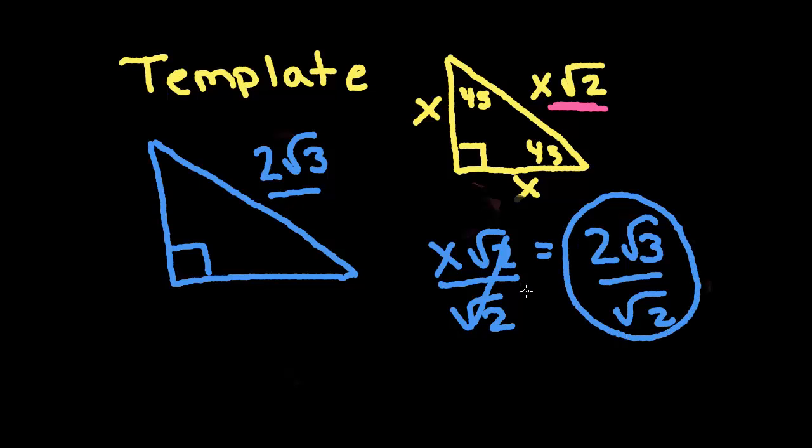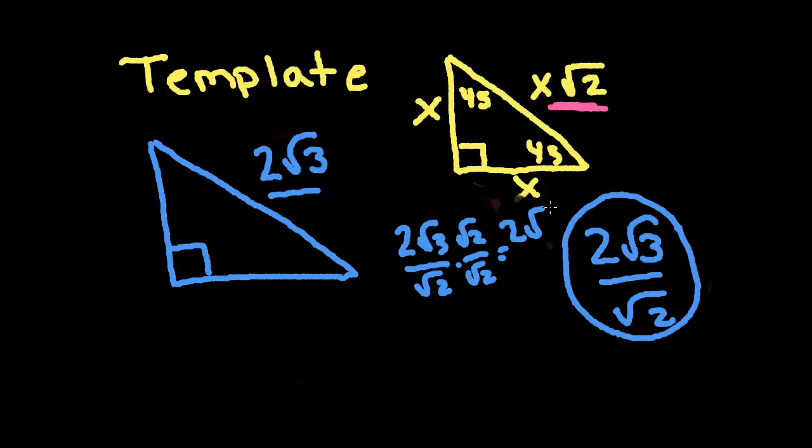However, it's not in simplest form. So, again, we need to rationalize that denominator. So, to do that, we are going to multiply top and bottom by square root 2 over square root 2. So, that gives us 2 square root 6 over 2. But, again, we notice these whole numbers reduce here. So, they actually cross completely off. And so, the end result is that we just get square root 6.